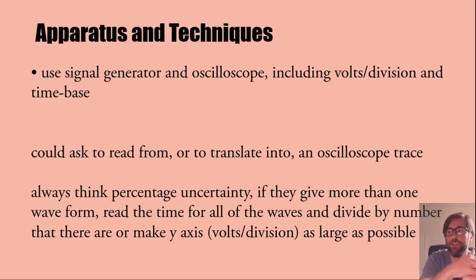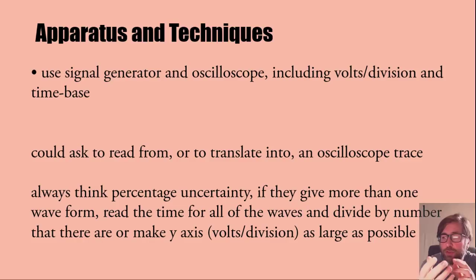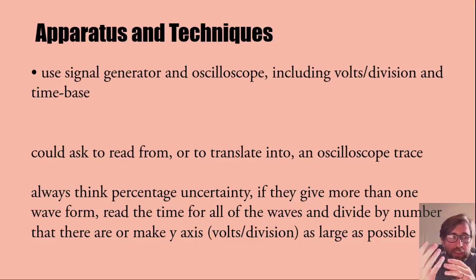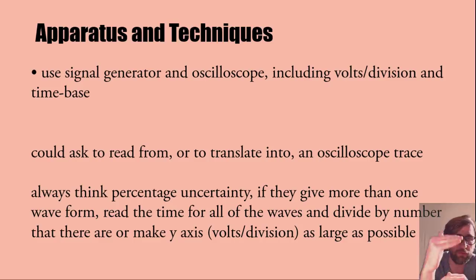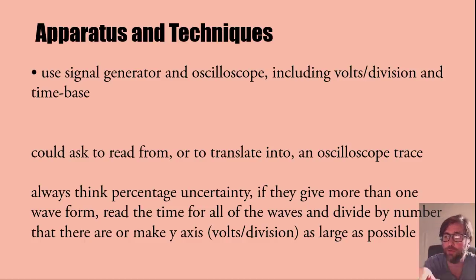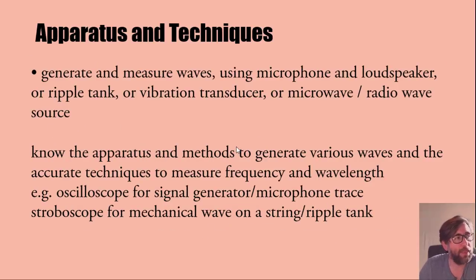They could ask you to read from an oscilloscope or draw onto one, in which case you might need to pick your own scale. Thinking about percentage uncertainty: if you have more than one waveform on the oscilloscope, use as many waveforms as you can and divide by the number. When reading off an oscilloscope, use the gain to change the volts per division to make the waveform as large as possible on the screen — this reduces the percentage uncertainty.